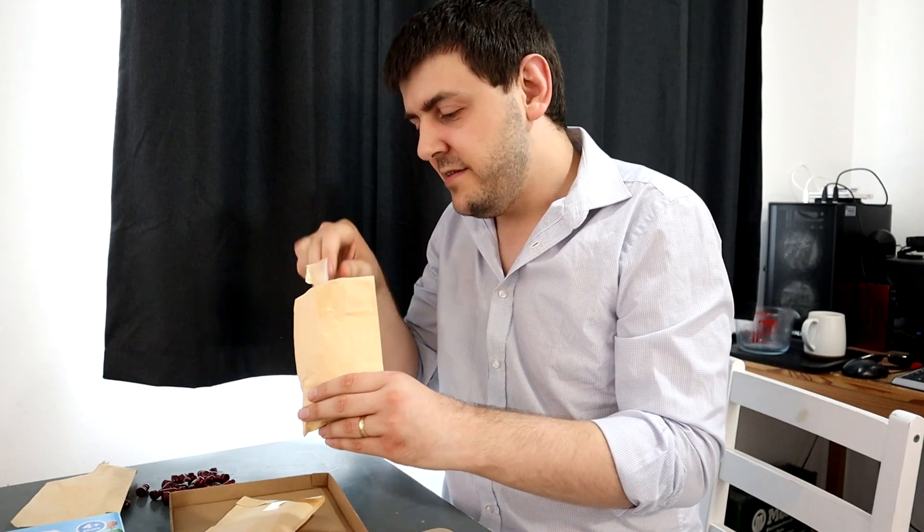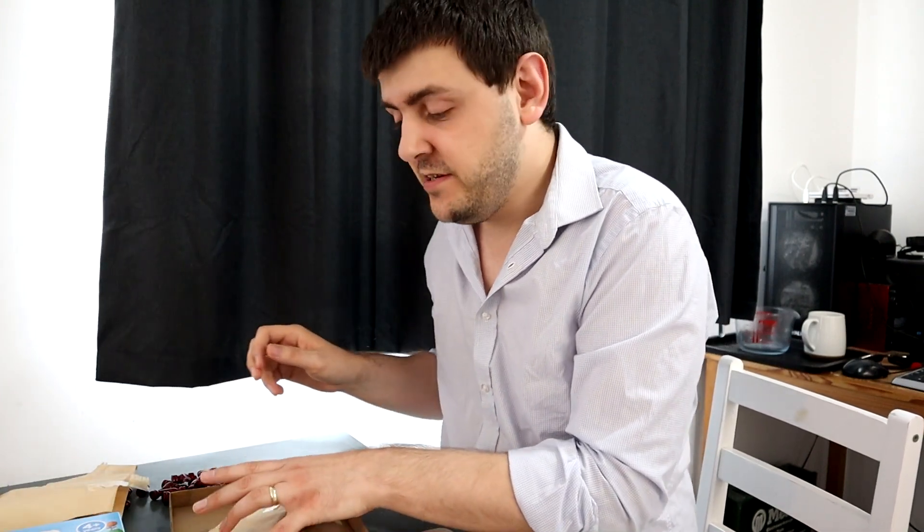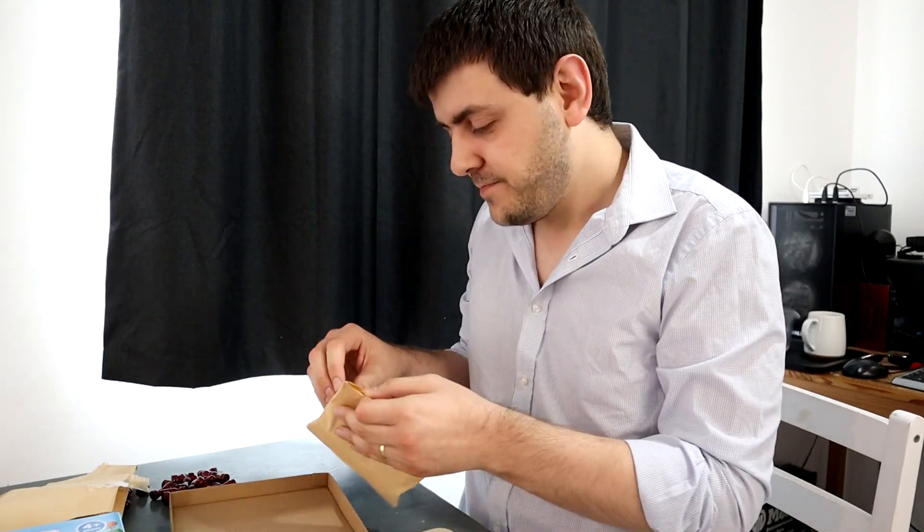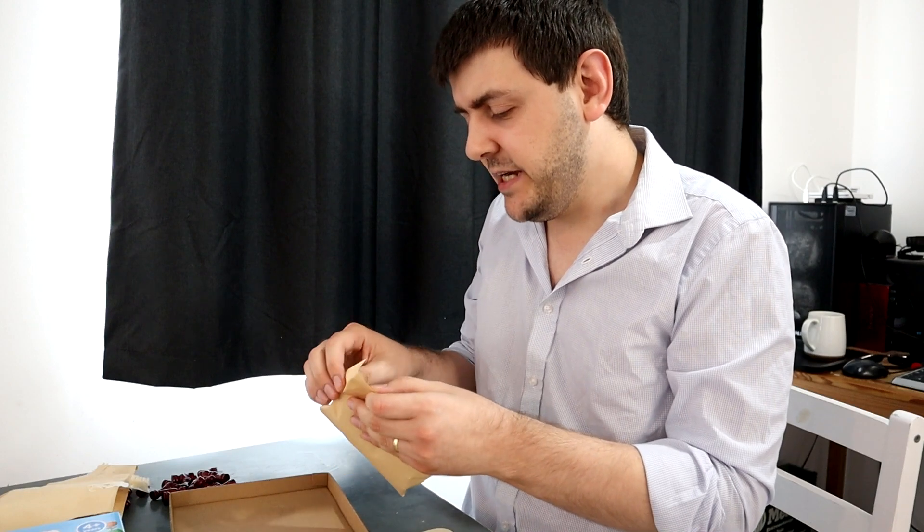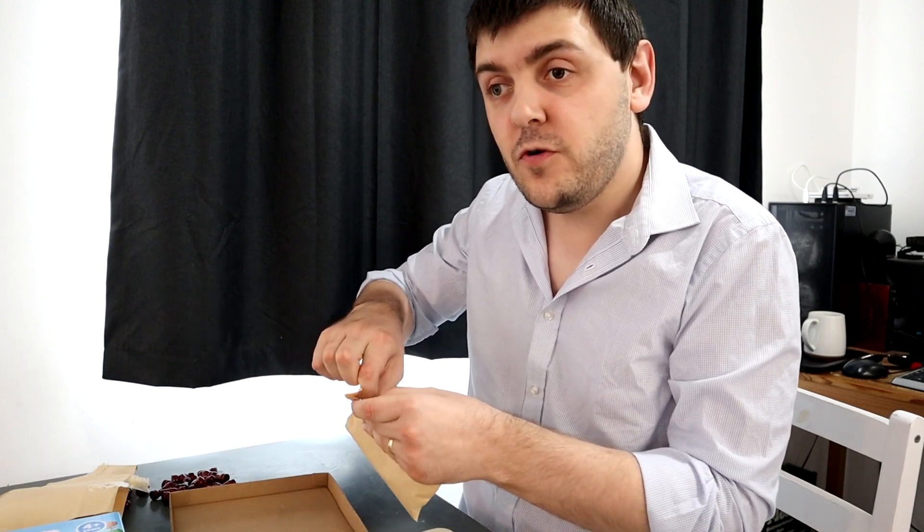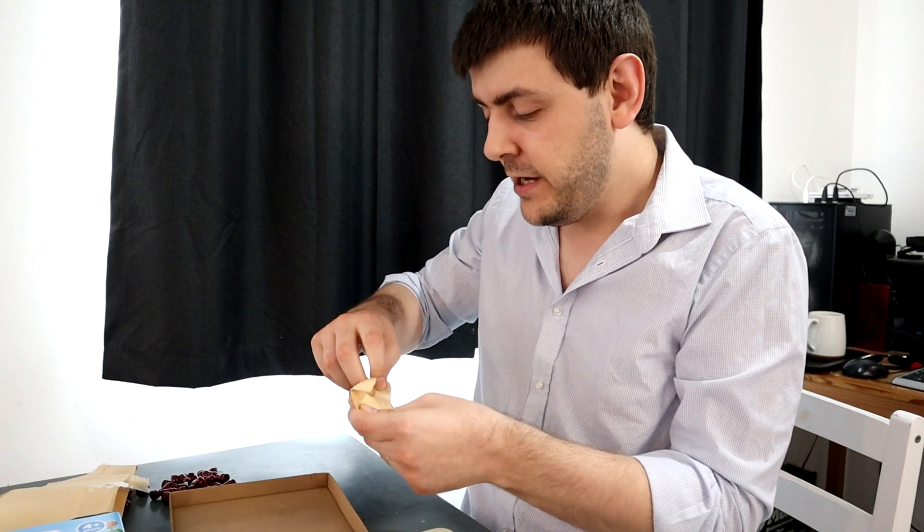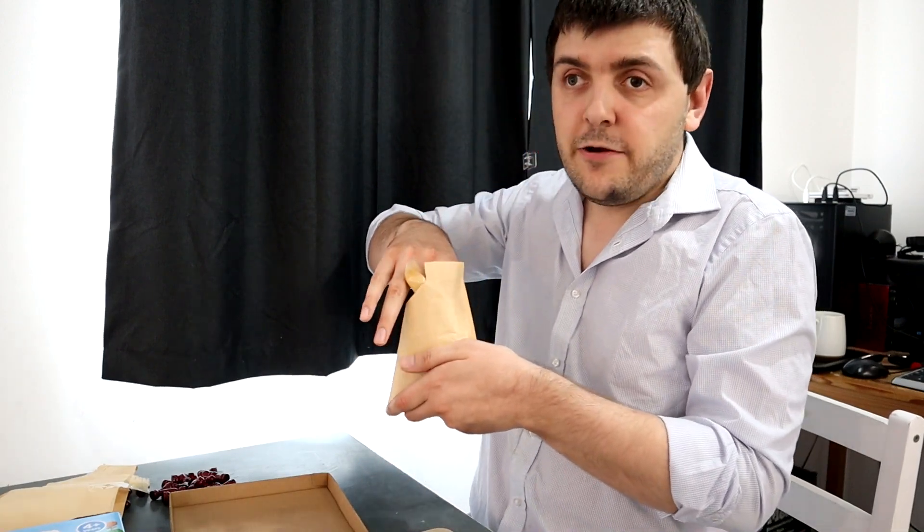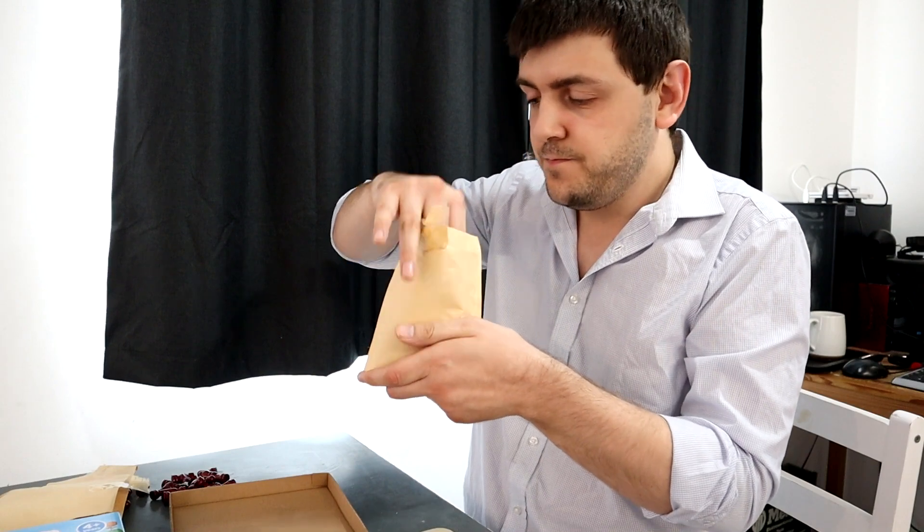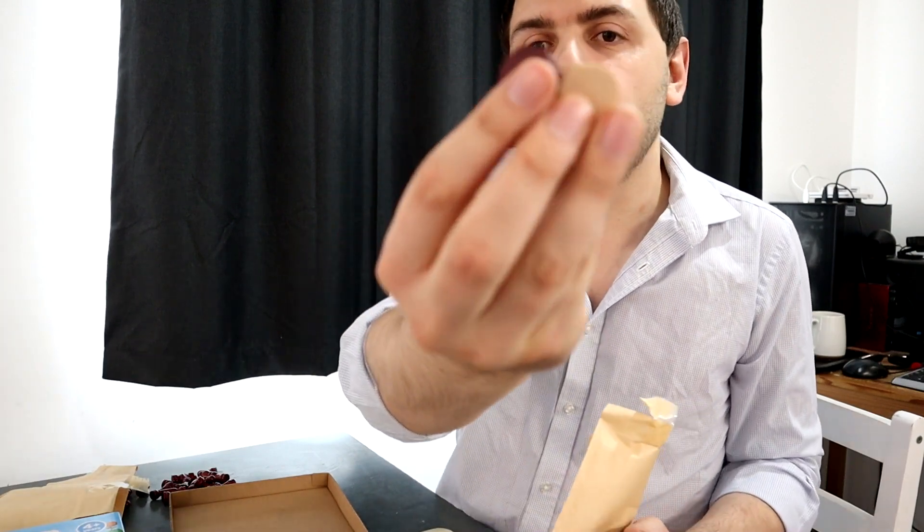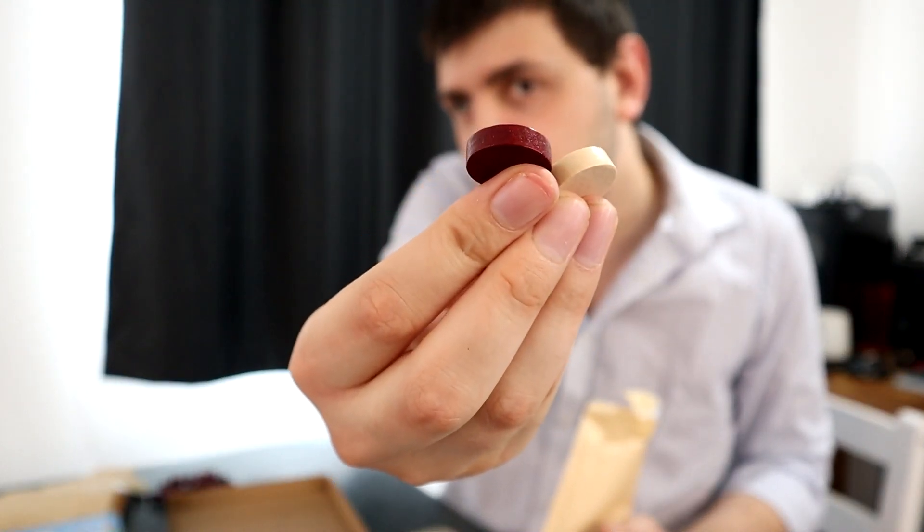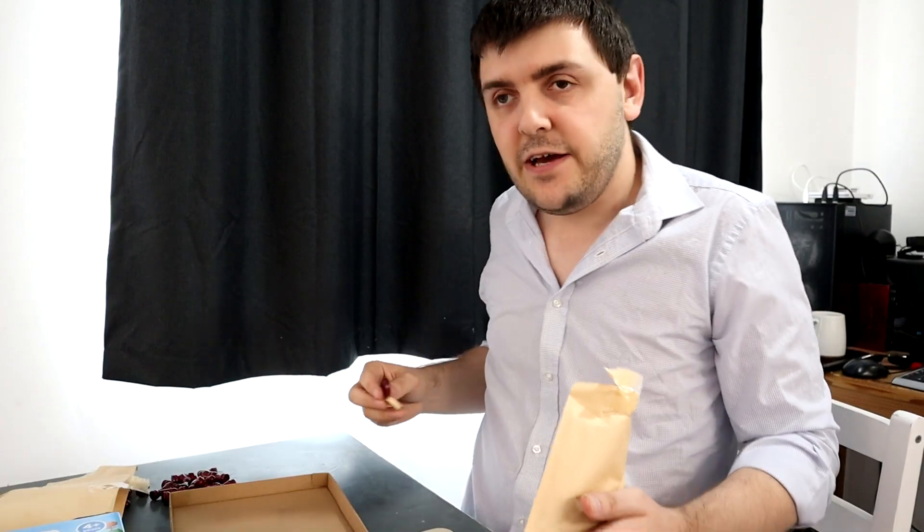Now I must admit, I did mainly buy this for the draughts section. One day I will learn how to play chess. It's not a game I'm particularly familiar with. If you've got any tips for chess, then put them below, and I'll try and take them into account when I'm learning. Let's have a look at these draught pieces. They're all in one bag here. You can see we've got sort of a white wood colour there, and then this reddy-brown colour. Let's see how they look on the board.